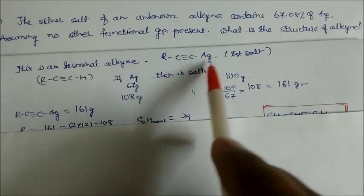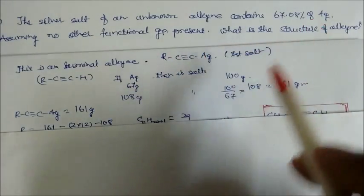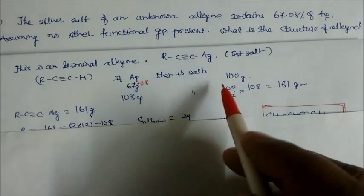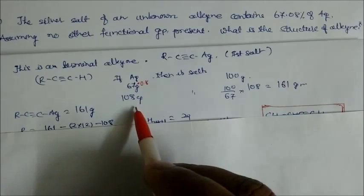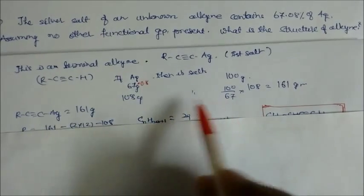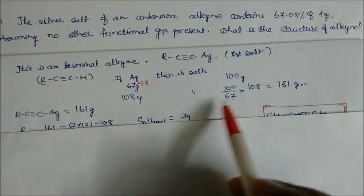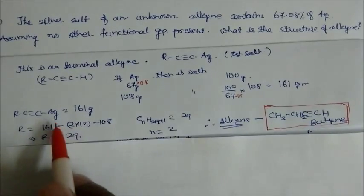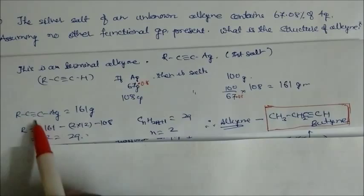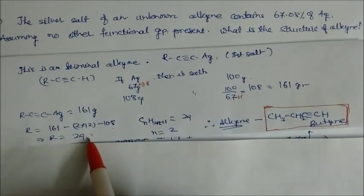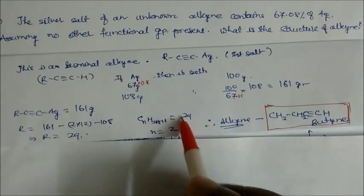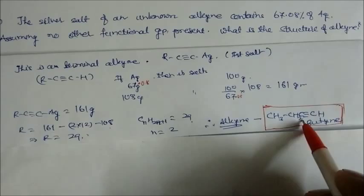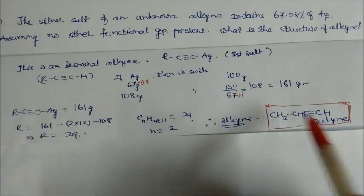From 100 grams of silver salt we get 67.08 grams of silver. Since the atomic mass of silver is 108 grams/mol, the molar mass of the silver alkyne salt is 108 × (100/67.08) = 161 grams/mol. The salt has two carbons and one silver (108g), so R = 161 − 108 − 24 = 29. R = C₂H₅ (since CₙH₂ₙ₊₁ = 29 gives n = 2). So the alkyne is but-1-yne (ethyl acetylide), and the silver salt is the silver salt of but-1-yne.